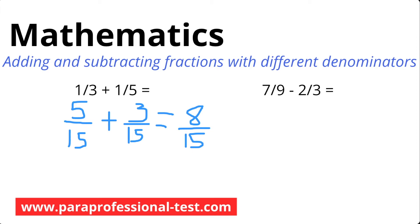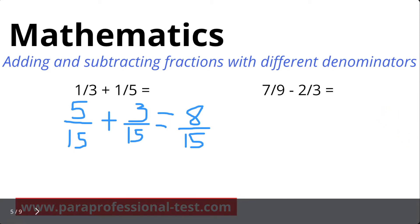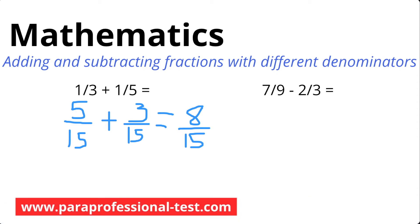Using the current denominators of 9 and 3, I'll think of a number that both 9 and 3 go into. 9 goes into 9 one time, and 3 goes into 9 three times, so our new denominator is 9. Let's rewrite the problem starting with the denominator of 9.